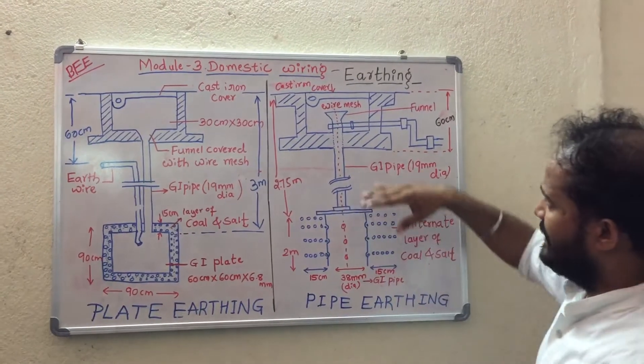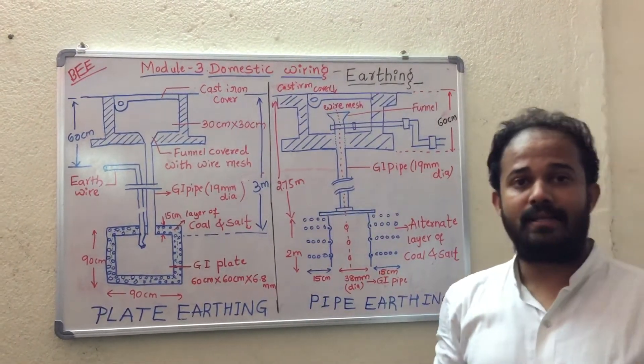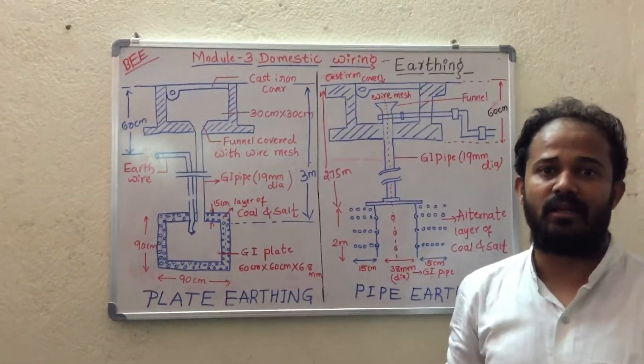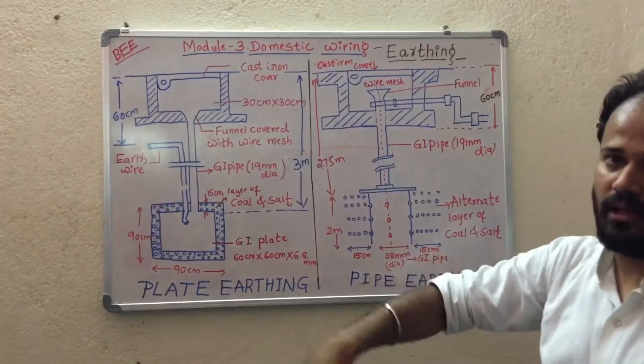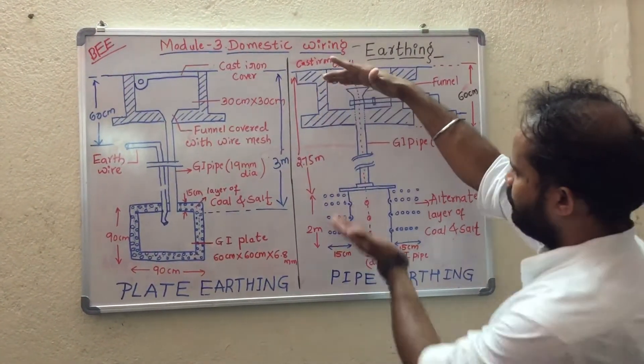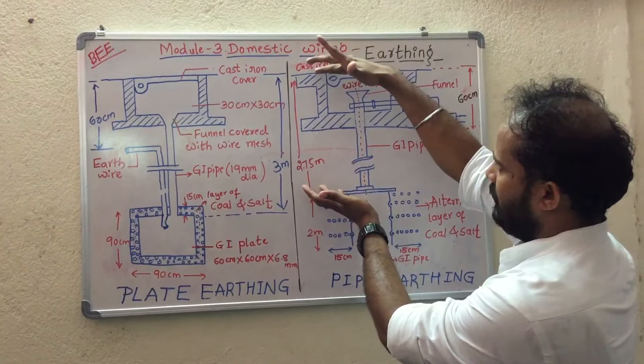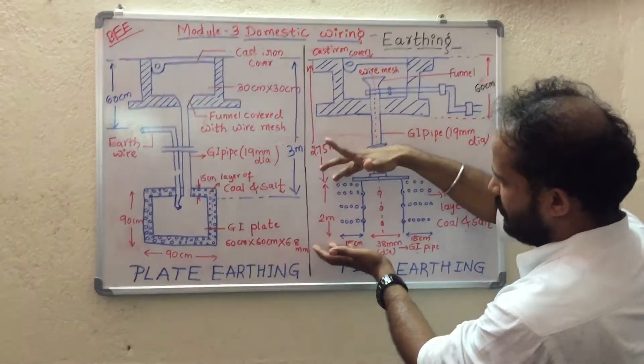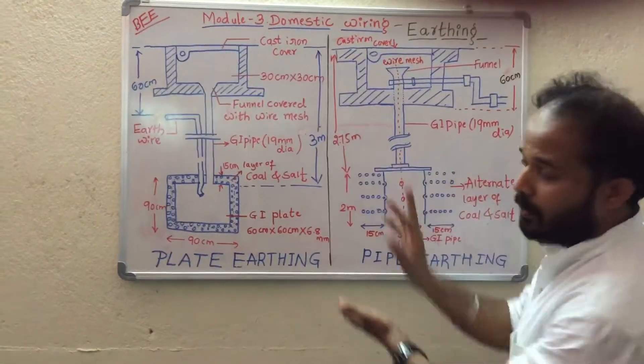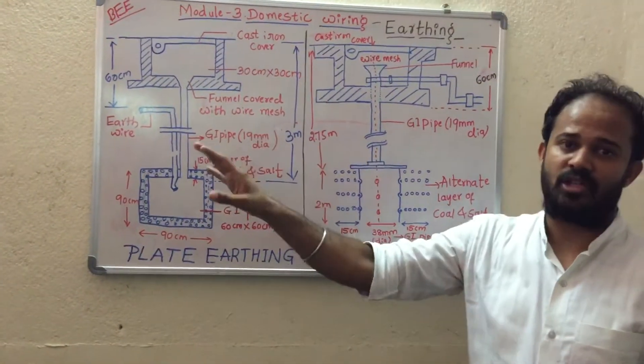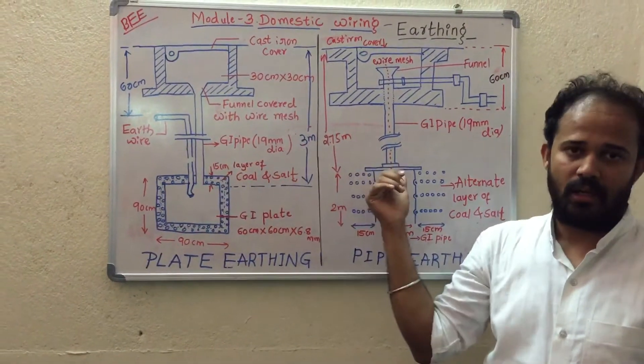According to the Indian standard, the depth of this particular pipe to be inserted within the earth is 2.75 meter, and the length of the pipe is 2 meter, totaling 4.75 meter, which is the standard of Indian connection type of earthing for pipe earthing.